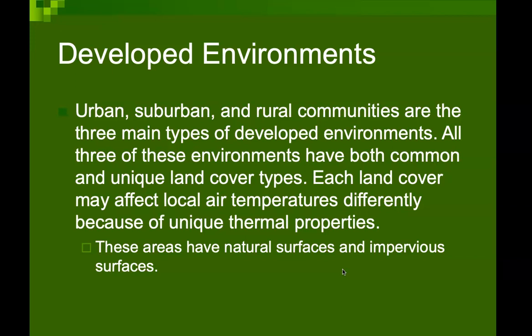There is a concept of the developed environment. Urban, suburban, and rural communities are the three main types of developed environment, which are being developed by human planners, architects, or developers. All three of these environments have both common and unique land cover types. Each land cover may affect local air temperature differently because of the unique thermal properties of building and paving materials, such as the type of construction. These areas have both natural surfaces and impervious surfaces.